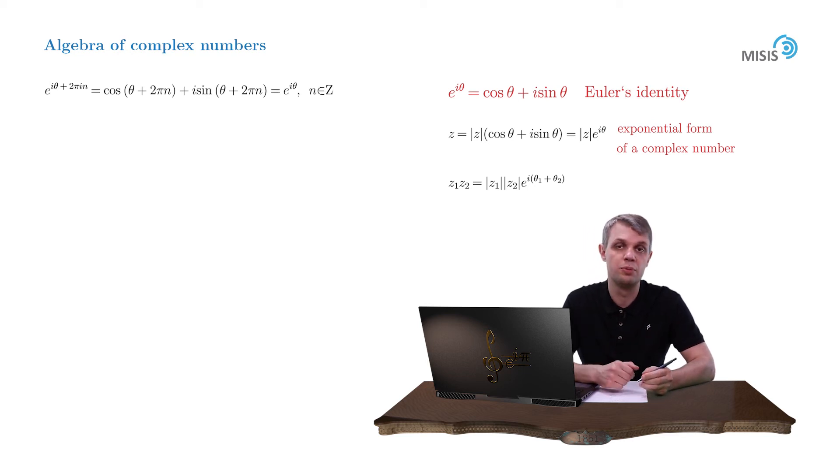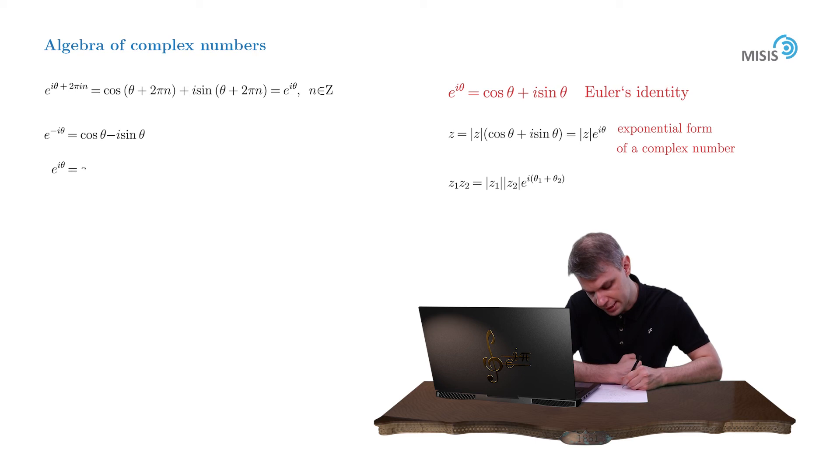Now let's derive one more beautiful consequence of Euler's identity. Let's write it down switching theta to minus theta. E to minus i theta is equal to cosine of minus theta, which is cosine of theta, plus sine of minus theta, which is minus sine of theta. So minus i sine theta.